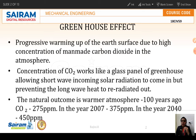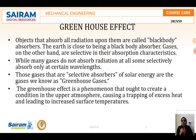The natural outcome is a warmer atmosphere. One hundred years ago, CO2 was at 275 ppm; in the year 2007 it was around 375 ppm; and by 2040 it is expected to reach 450 ppm. An object that absorbs all radiation upon it is called a black body, and the earth is close to being a black body absorber. Gases, on the other hand, are selective in their absorption characteristics — some do not absorb radiation at all, while others selectively absorb only at certain wavelengths. Gases that are selective absorbers of solar energy are known as greenhouse gases.